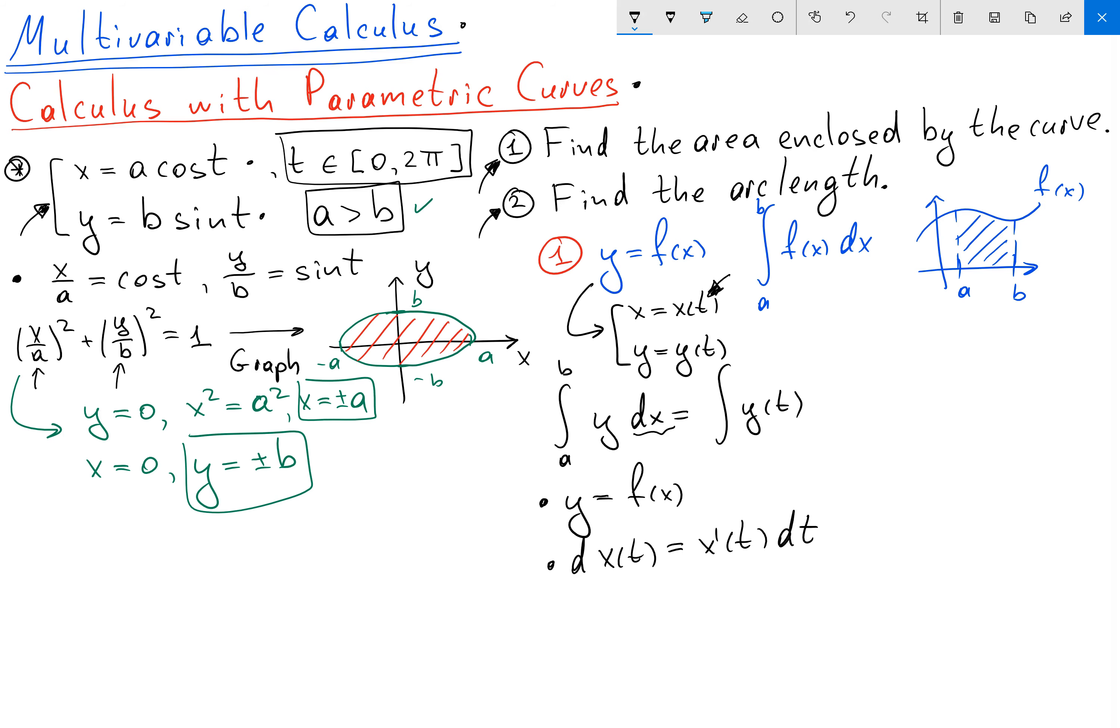Then I can rewrite my dx as x prime of t dt. Right now we have integral in terms of t. So we want to change our bounds to be in terms of t. So we're saying that we go from our initial point to our terminal point, in other words from t0 to t1. So the formula for area for parametric equation is going to be the following: integral from t0 to t1 of y of t times x prime of t dt.